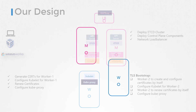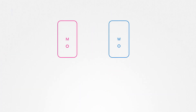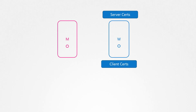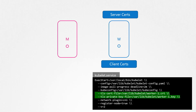Let's simplify this by only looking at a master and a would-be worker node. There are two types of certificates configured on the worker nodes: a server certificate and a client certificate. In the previous method, while configuring the Kubelet for worker one, we specified the path to the server certificates for Kubelet on worker one in a service configuration file. This is used by clients to connect to the Kubelet.